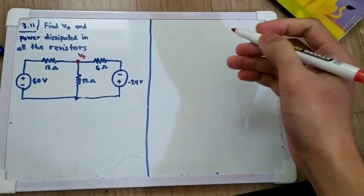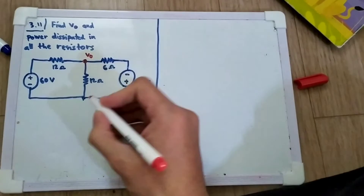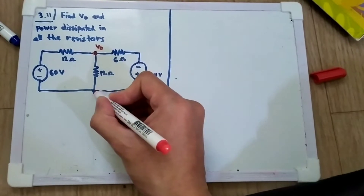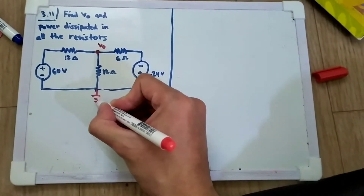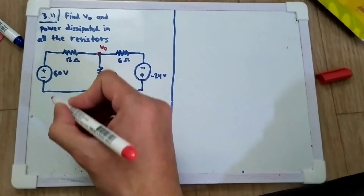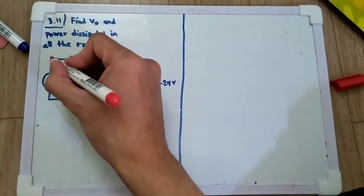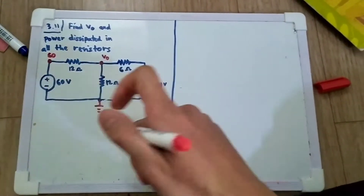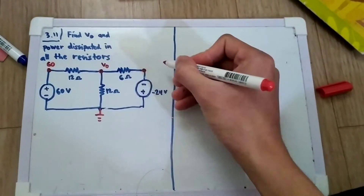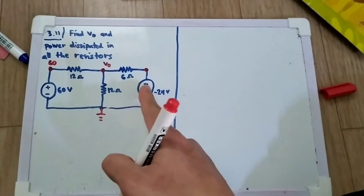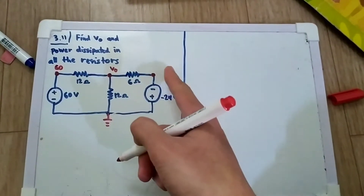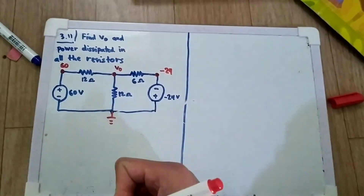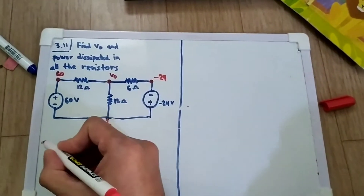This is problem 3.11 of Sadiku. We need to find V0. I will assume this is our ground, which gives us a node here. This node will be 64V because of the voltage source. This node here — since the polarity is positive at the top, the bottom must be lower, so it is minus 24V. Now we will use KCL.